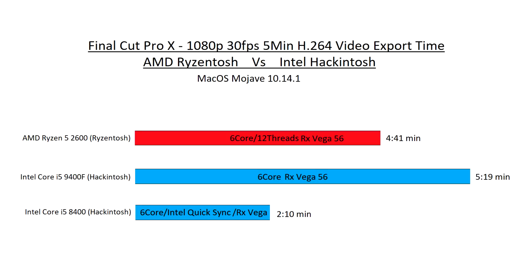First thing — I couldn't test DaVinci Resolve, so I hope you guys aren't mad. I wanted to compare DaVinci Resolve with Final Cut Pro, but when I installed macOS Mojave fresh on both hackintoshes, Final Cut installed fine as a trial, but DaVinci Resolve gave me problems from their website — probably because I tried installing it too many times. I'll make a follow-up video for that. What I did manage to test was Final Cut Pro with a 1080p 30fps, 5-minute H.264 video export.